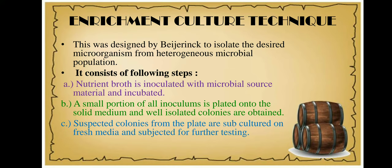I will take a small amount of this culture from the nutrient broth and inoculate it onto a solid medium which also contains cellulose powder. Only the organisms producing the enzyme cellulase will grow in the nutrient broth and on the cellulose-containing solid medium, since I have enriched the culture with cellulose powder.